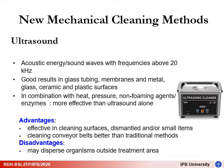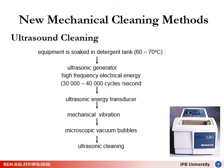Several new mechanical cleaning methods are now available. The first is ultrasound — sound waves with a frequency above 20 kHz — which is effective for cleaning glass tubing, membranes, metals, ceramics, and plastic surfaces. Ultrasound is even more effective when combined with heat, pressure, non-foaming agents, or enzymes. Equipment is soaked in a detergent tank, and the ultrasonic generator produces high-frequency electrical energy that transduces into mechanical vibration, forming microscopic bubbles that loosen soil from the equipment.